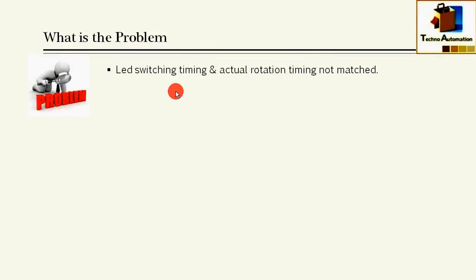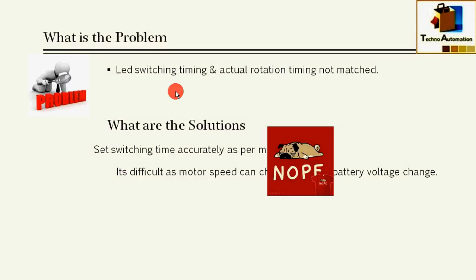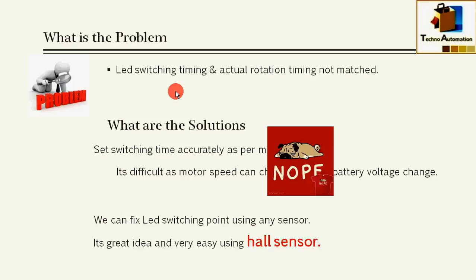What are the solutions? The first solution is to set switching time accurately as per the motor speed. It's difficult as motor speed can change due to battery voltage, so it's not a practical solution. The second solution is we can fix LED switching point using any sensor, and it's a great idea and very easy using Hall sensor.